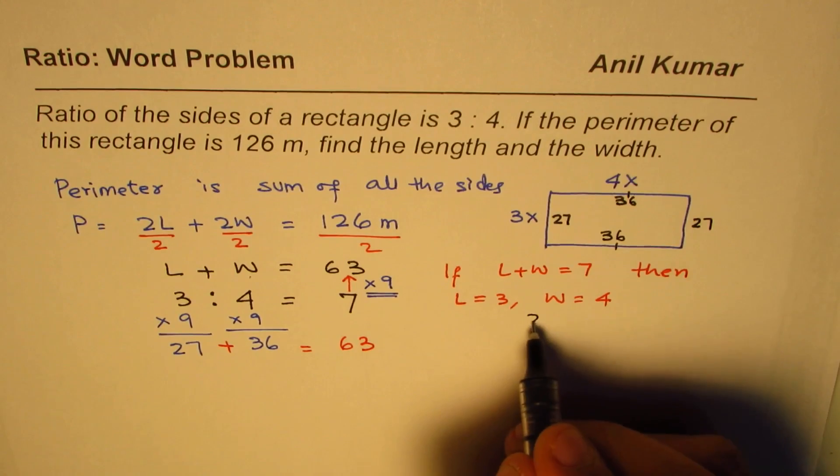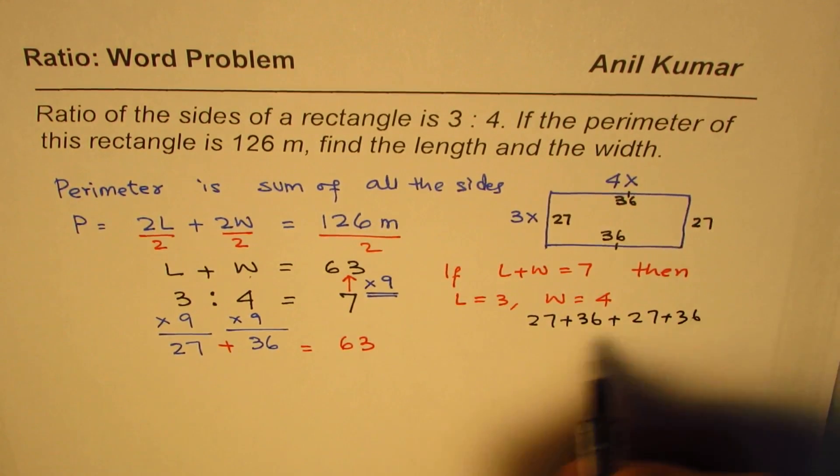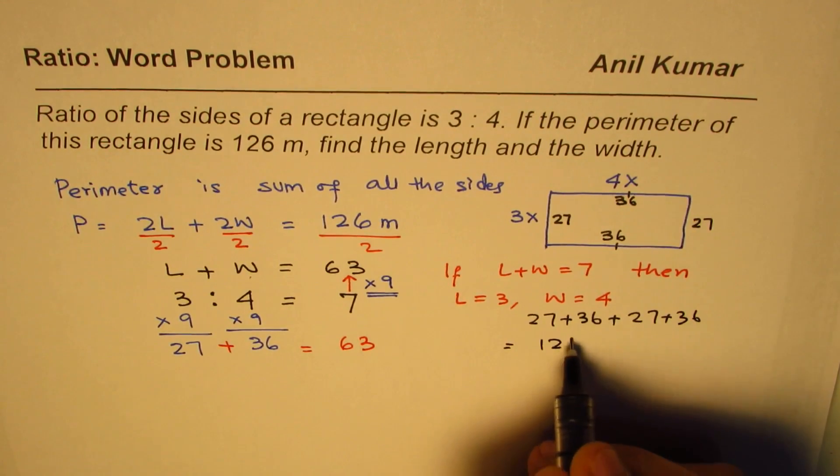So this is also 36 and this is 27. If you add them all, what do you get? 27 plus 36 plus 27 plus 36, you will definitely get 126 meters, right? So they help you.